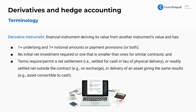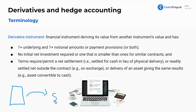Your house has value inherently because people can live in it. A gold bar has value because it's pretty and has uses like jewelry. Food has inherent value. But if I sign a contract with you that says you're going to give me bars of gold or food, then that piece of paper — that contract — is a derivative. It derives its value from those valuable assets.